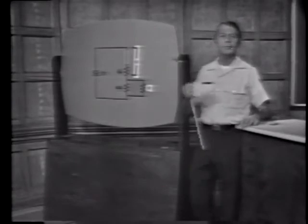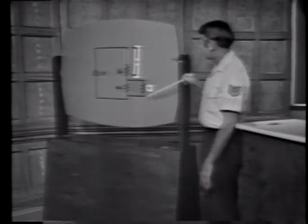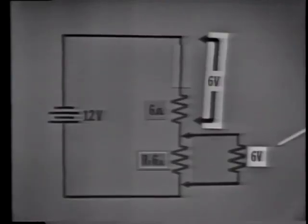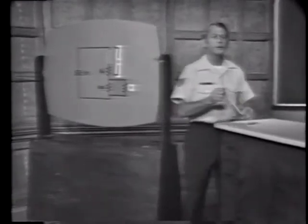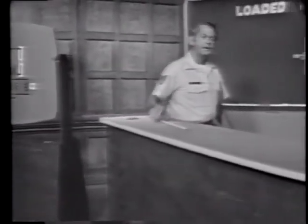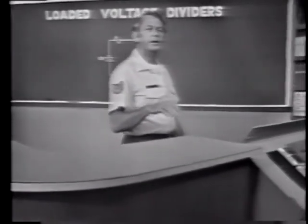We're finally obtaining the voltage we need, but let's think about this for a minute. We only get the correct voltage with one particular load. If the load changes, the voltage in the divider will change, limiting the use of the voltage divider to one specific load. Let's go a step further and see if we can maintain a constant voltage under varying load conditions.